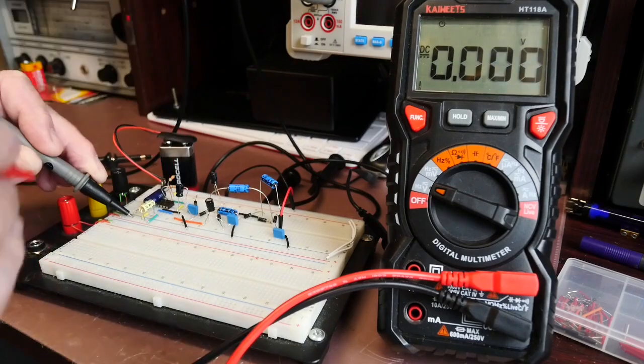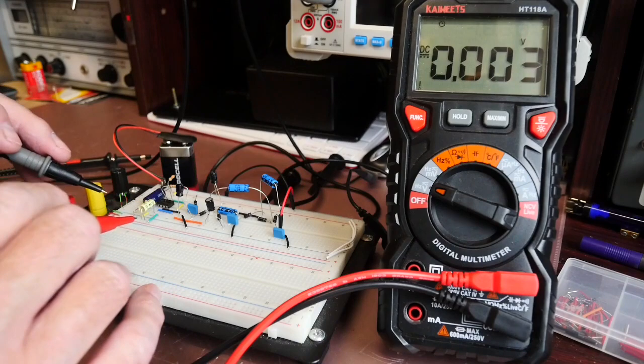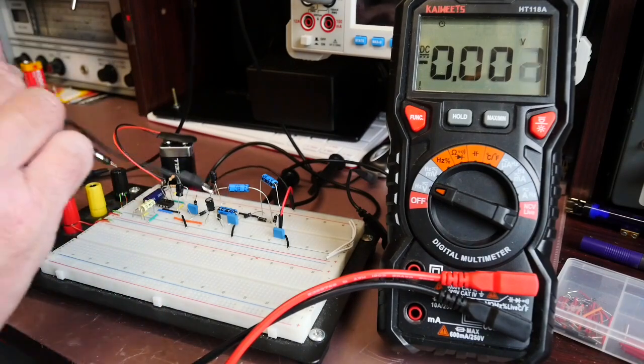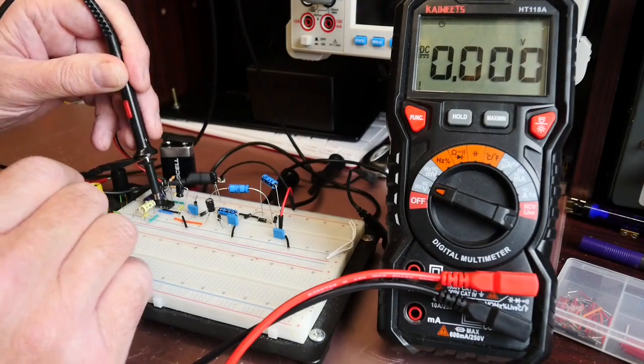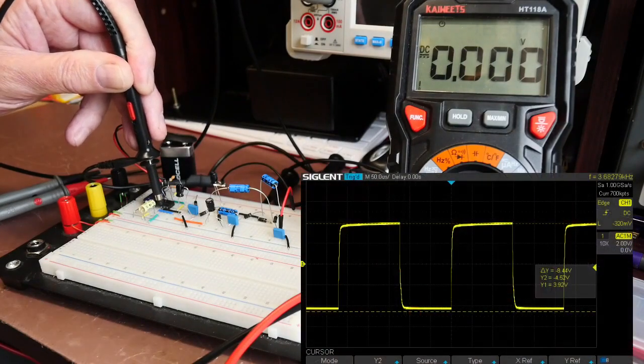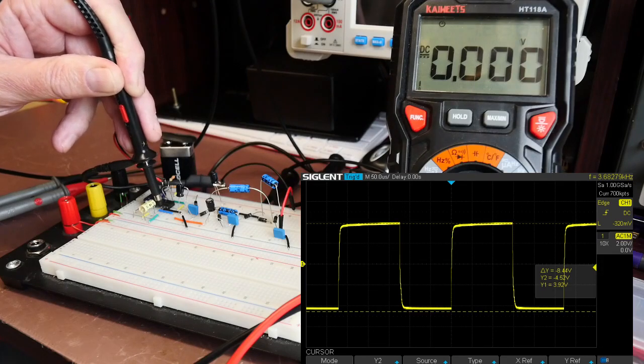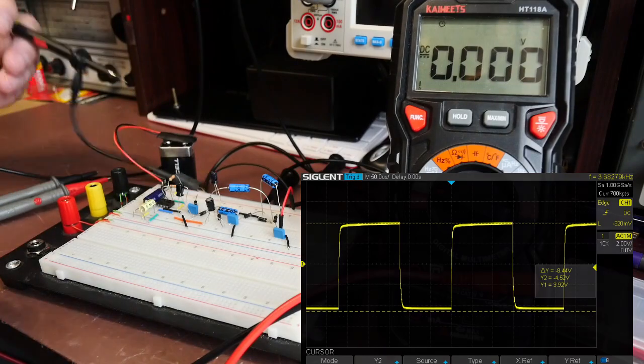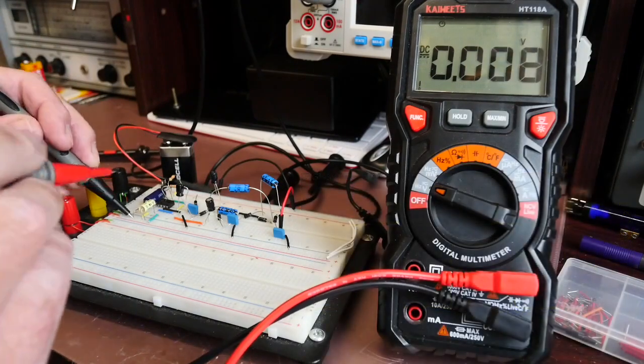Next thing I'm going to check is the peak to peak output of the 555's pin 3 output there and I'm going to take a screen grab of the scope there you can see. And we've got a delta of 8.44 volts so we're getting 8.44 peak to peak onwards to the multiplication.